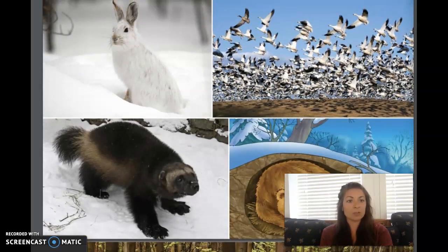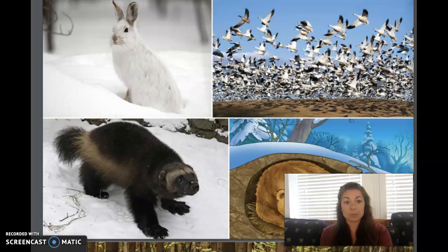In winter, some animals whose food source is affected by the change in climate migrate, or leave for warmer places. These animals sense the change in daylight and temperature and begin their annual migration. Migration is part of a yearly cycle of changes. Some birds, for example, travel long distances to their winter homes. They prepare for their migration by eating lots of food they can store as energy to use on their journey. Mammals such as caribou and elk migrate across vast expanses of land, and even fish migrate in winter in search of warmth and food.